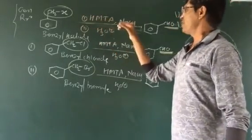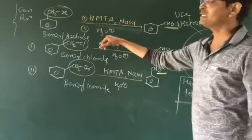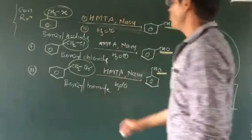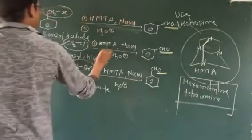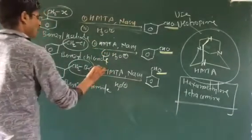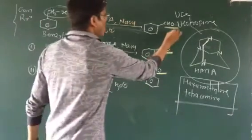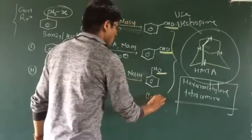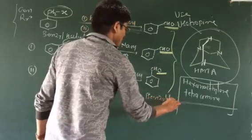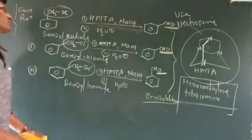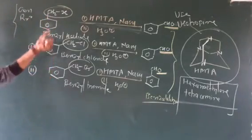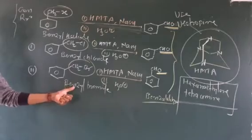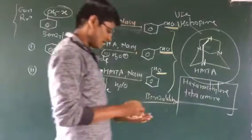This is basic condition — hydrolysis, second reaction condition. What happened? Benzaldehyde is formed. All types of products give benzaldehyde — benzaldehyde formation. Starting reaction: benzyl halide, benzyl chloride, benzyl bromide — this type of reaction.